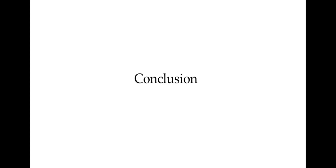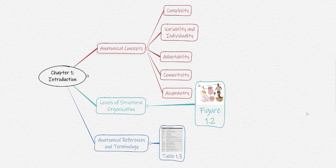Let's return once again to an overview of this lesson and see what we went over. So, what did we cover in this lesson? Well, again, we've looked at anatomical concepts, levels of structural organization, and anatomical references and terminology. For the anatomical concepts, we looked at complexity, variability and individuality, adaptability, connectivity, and asymmetry. The levels of structural organization in Figure 1-2 include atoms, molecules, cells, tissues, organs, organ systems, and organisms.